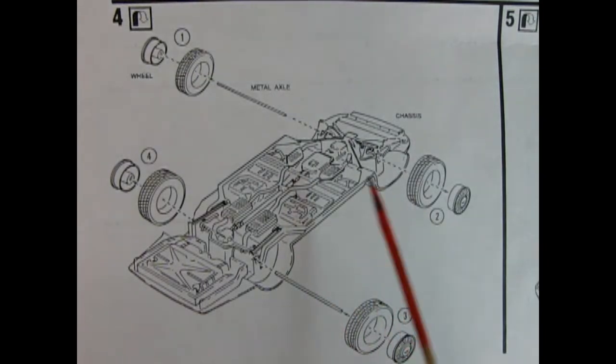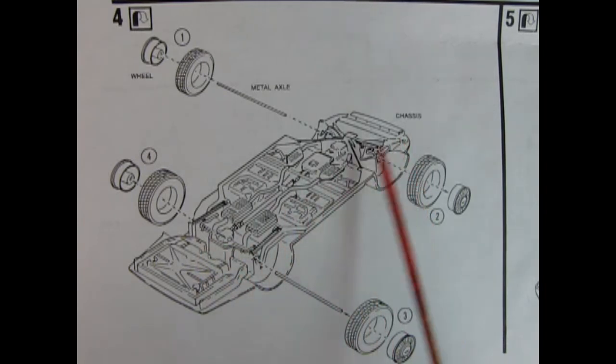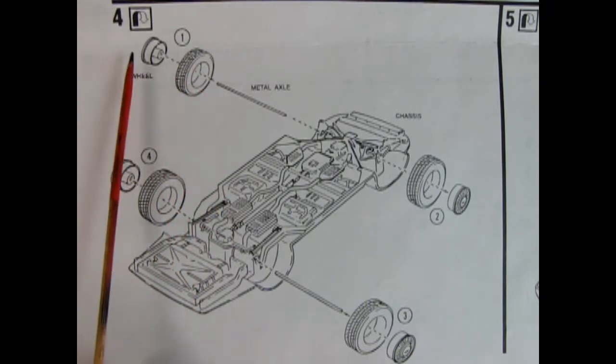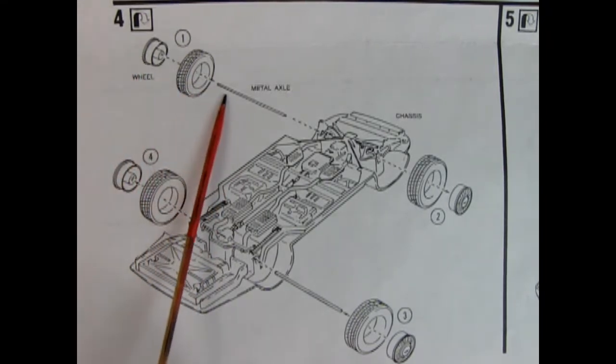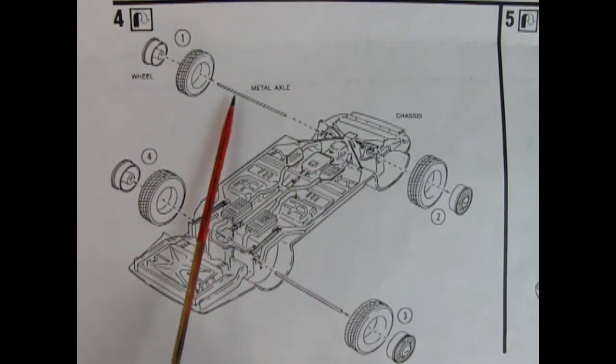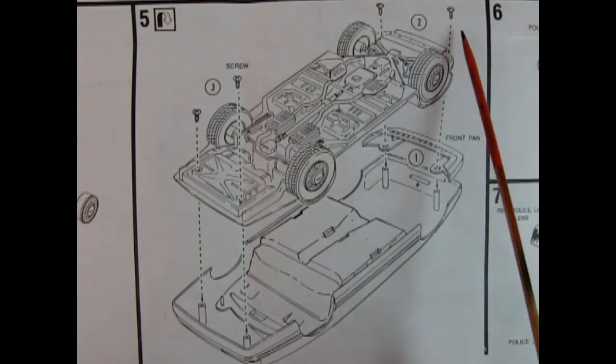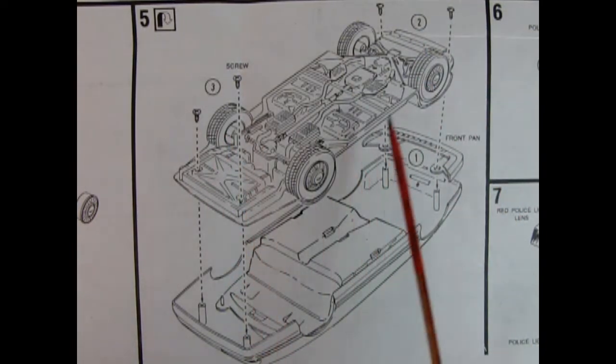In panel four we see our one piece chassis with the engine block and the rear axle differential and everything all molded as one piece. The wheels are actually two pieces so you get your tire and your wheel and those connect together and they're attached with a metal axle. Same for the back. Panel five is very simplistic. There's our chassis going down onto the body and the front pan also gets put in there and it's all held together by these four screws.